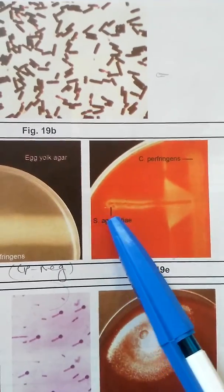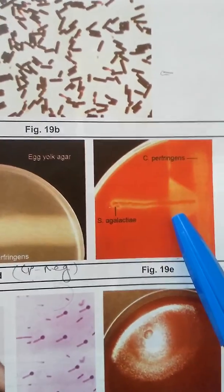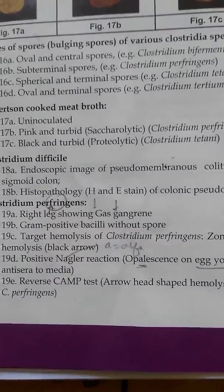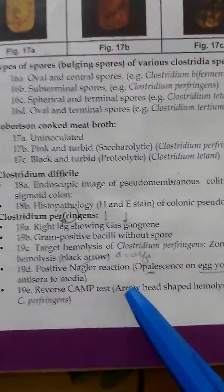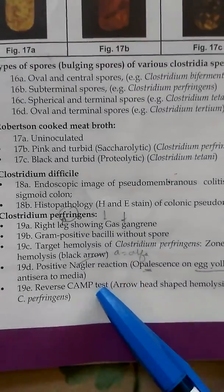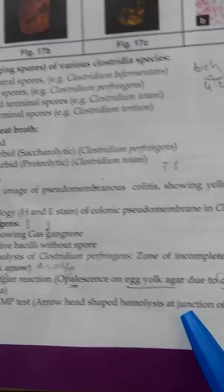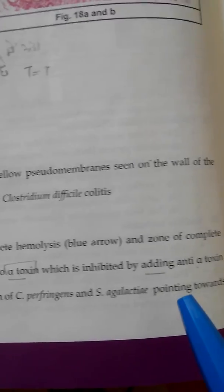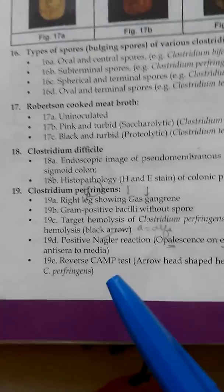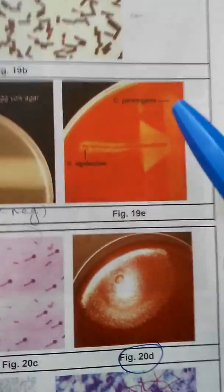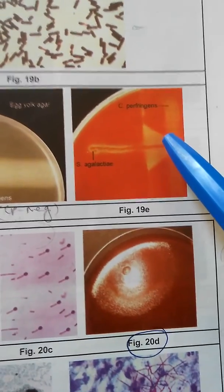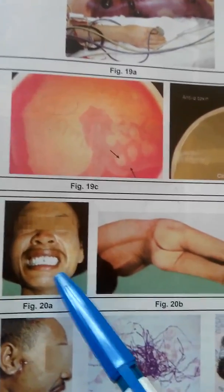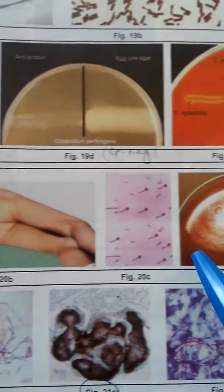19e shows the reverse CAMP test — another separate one-liner question asked in many exams. This is Clostridium perfringens streaked against Streptococcus agalactiae, producing arrowhead-shaped hemolysis at the junction of the two organisms, pointing towards Clostridium perfringens. This is the reverse CAMP test.